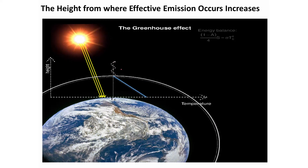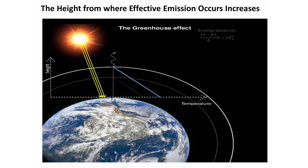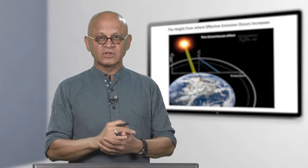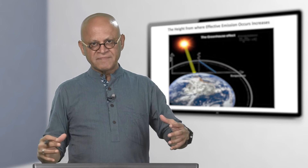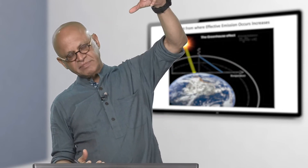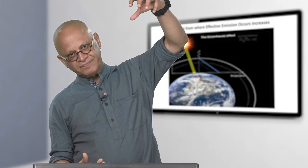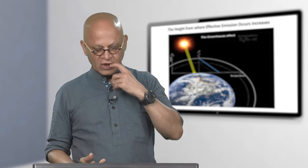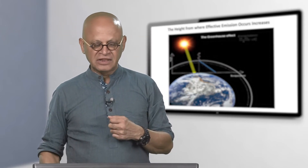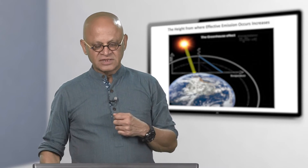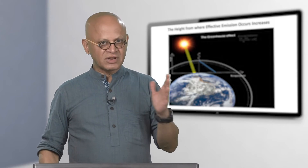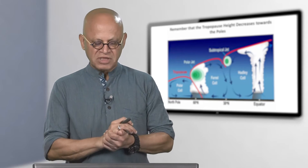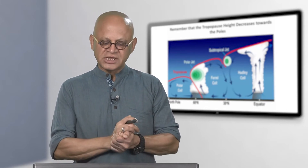There is evidence that the tropopause — at which the sign of the temperature gradient changes, separating the troposphere from the stratosphere — begins to increase in height. They are putting more energy into the system and that is expanding the air column. That is how you have to essentially explain the greenhouse effect. Go back and listen as many times as you want and you will see what I mean.